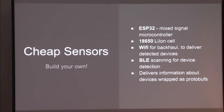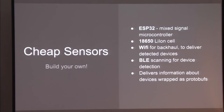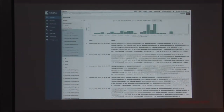We kept these as cheap as possible. The ESP32 microcontroller drives it - the cheapest Chinese microcontroller that does both Wi-Fi and BLE you can get on the market. There's an 18650 lithium-ion cell for power. We use Wi-Fi to backhaul the messages to a server in the cloud, and we do BLE scanning with the BLE core. We wrap everything up in protobufs and deliver it to a back-end server that stores it in Elasticsearch, with Kibana as the best way to represent that data visually.